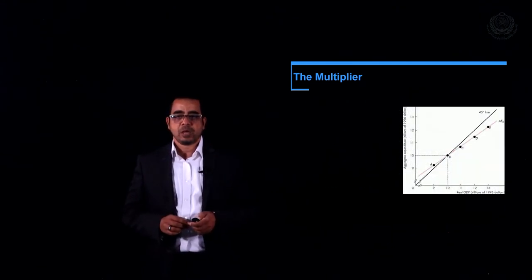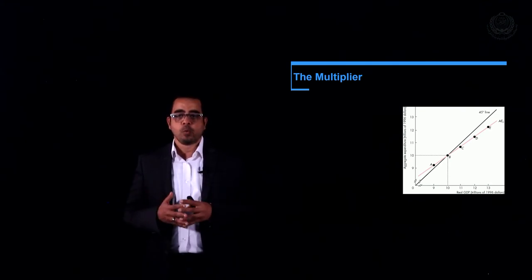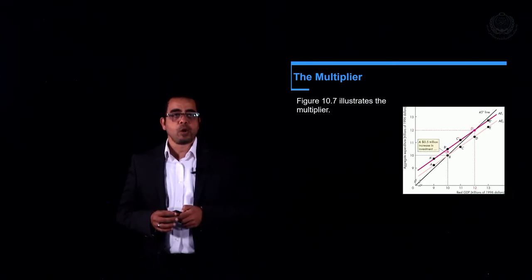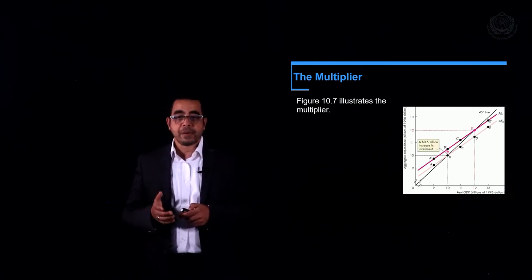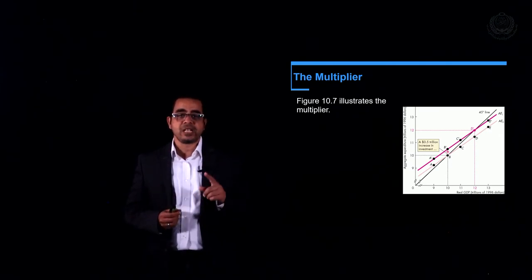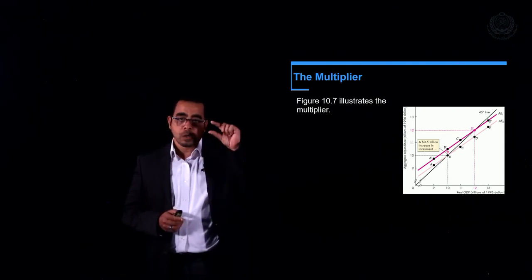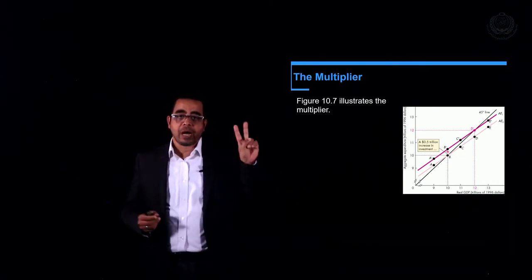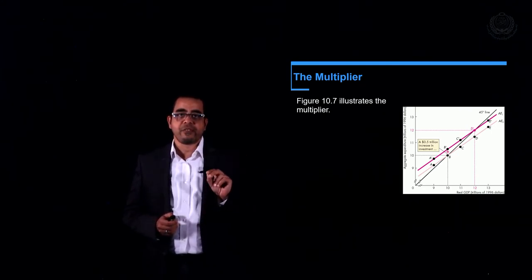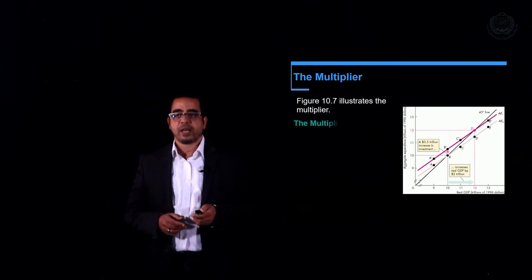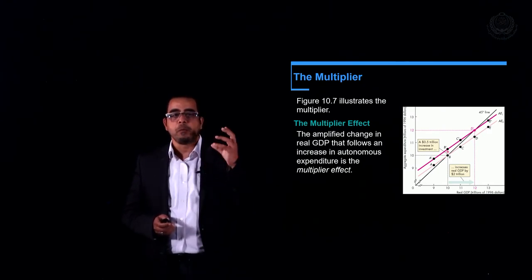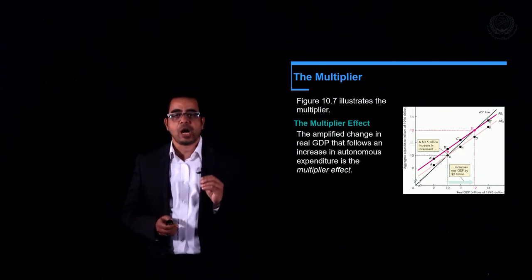Let's see this graphically. Our curve sits at the 45-degree line at point B, where the equilibrium GDP is 10 trillion dollars. There was an increase in investment by 0.5 trillion. What happened is that GDP didn't increase to 10.5 trillion — it increased to 12 trillion. So a 0.5 trillion increase in investment caused GDP to increase by a full 2 trillion. This is the effect of the multiplier, which implies that the change in real GDP will be higher than the initial increase in autonomous expenditure.